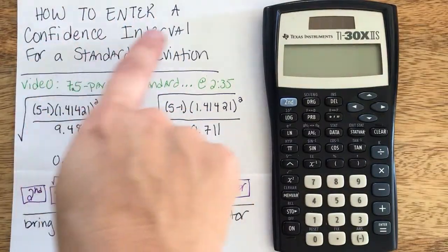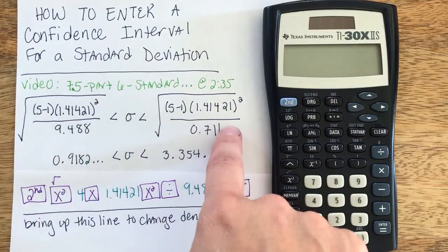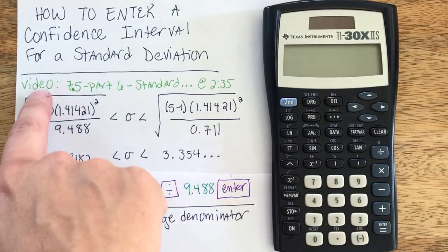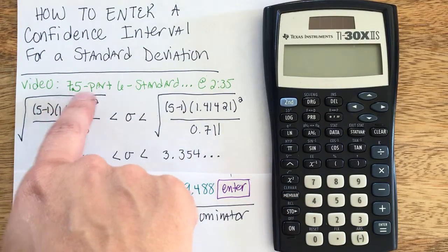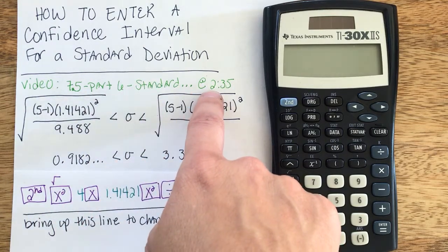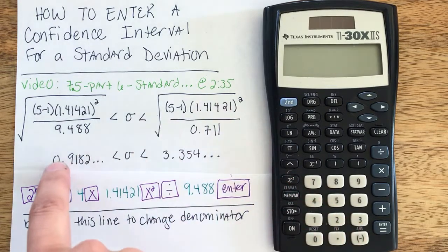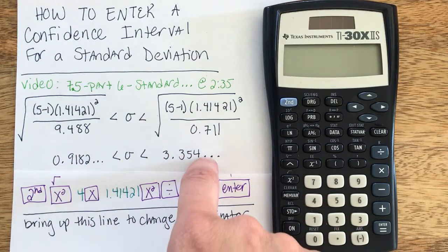Here's how to enter a confidence interval for a standard deviation. The problem I'm solving I took from my video titled 7.5 Part 4 Standard Deviation. At timestamp 2 minutes and 35 seconds, this particular problem displays, and I've shown the answer that we need to receive.